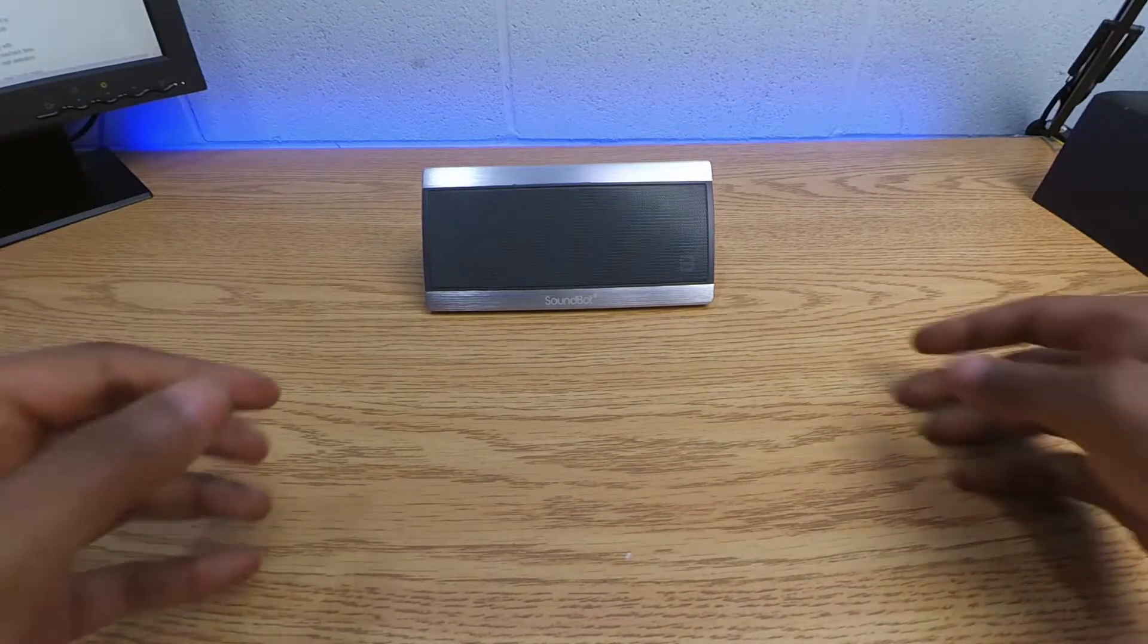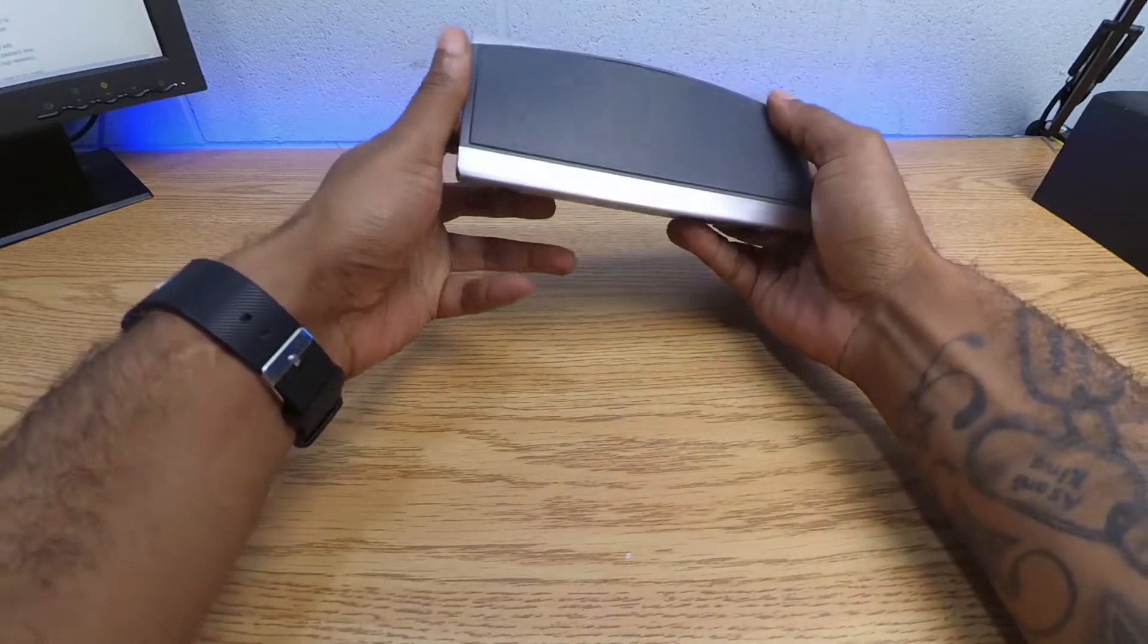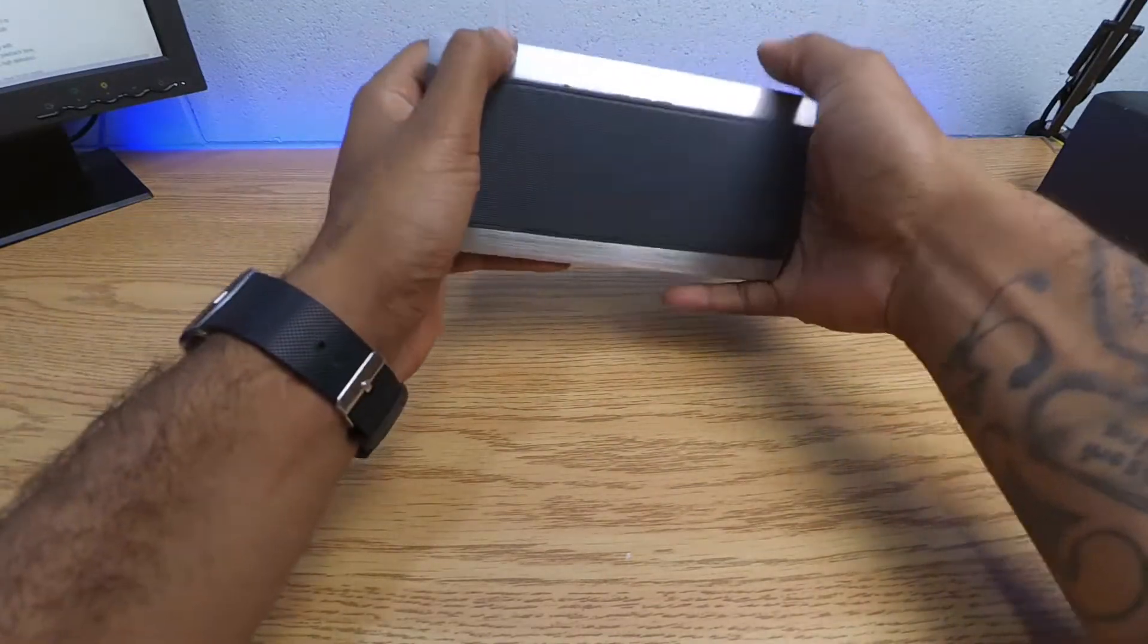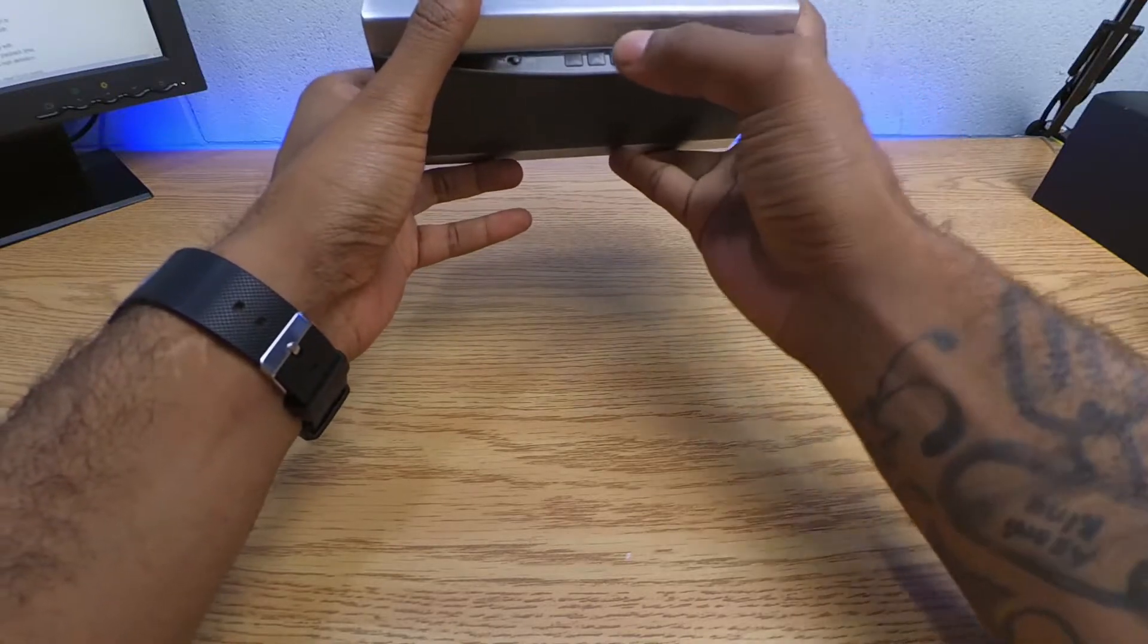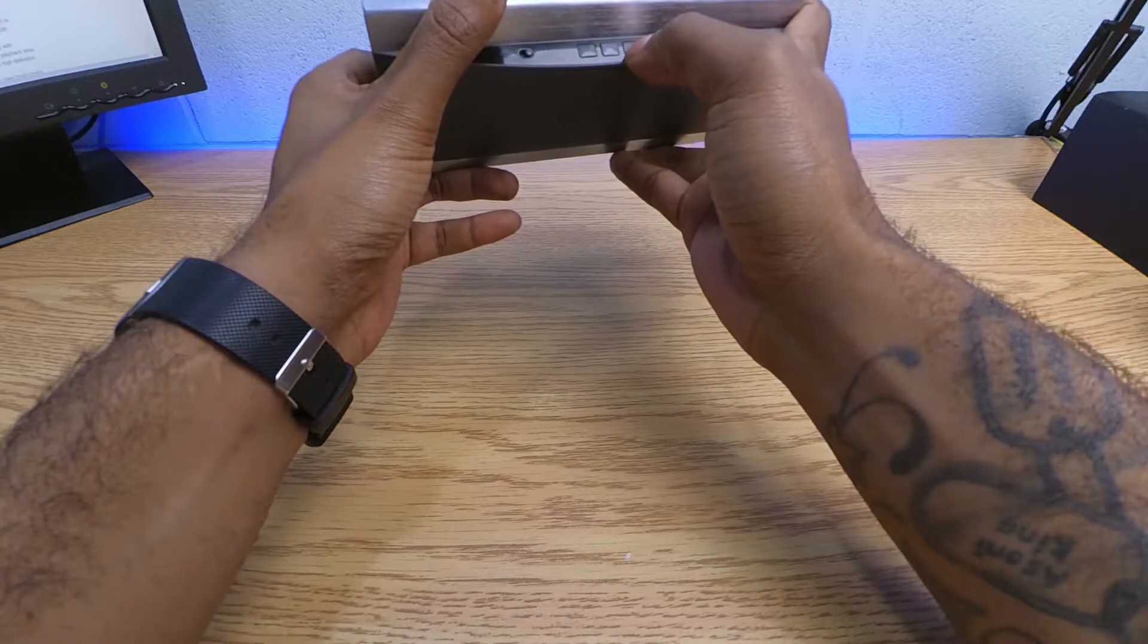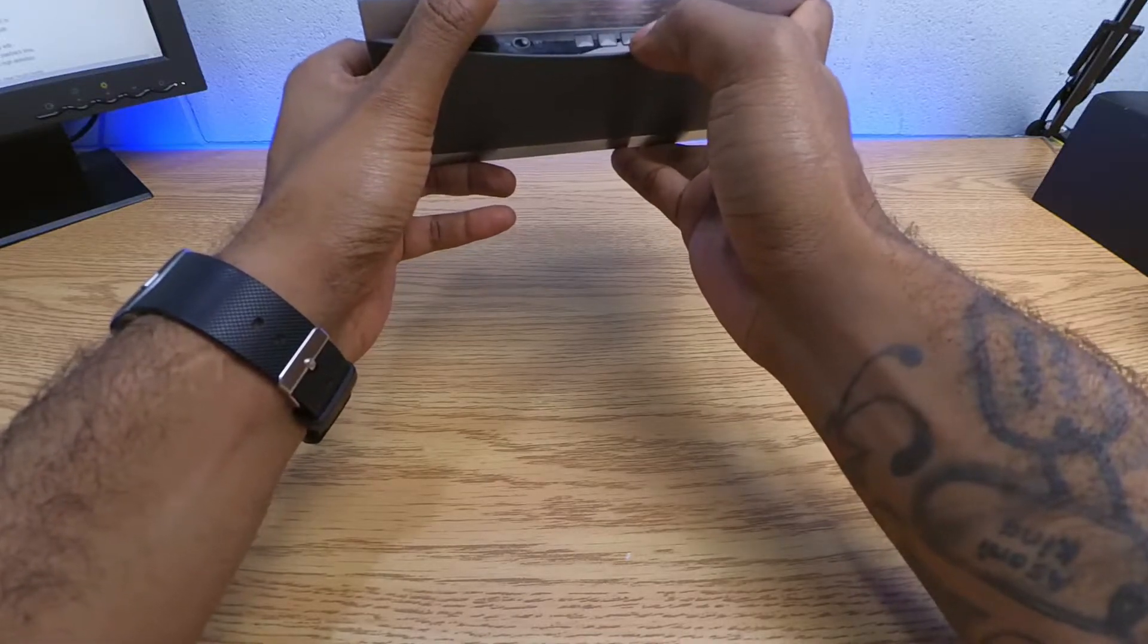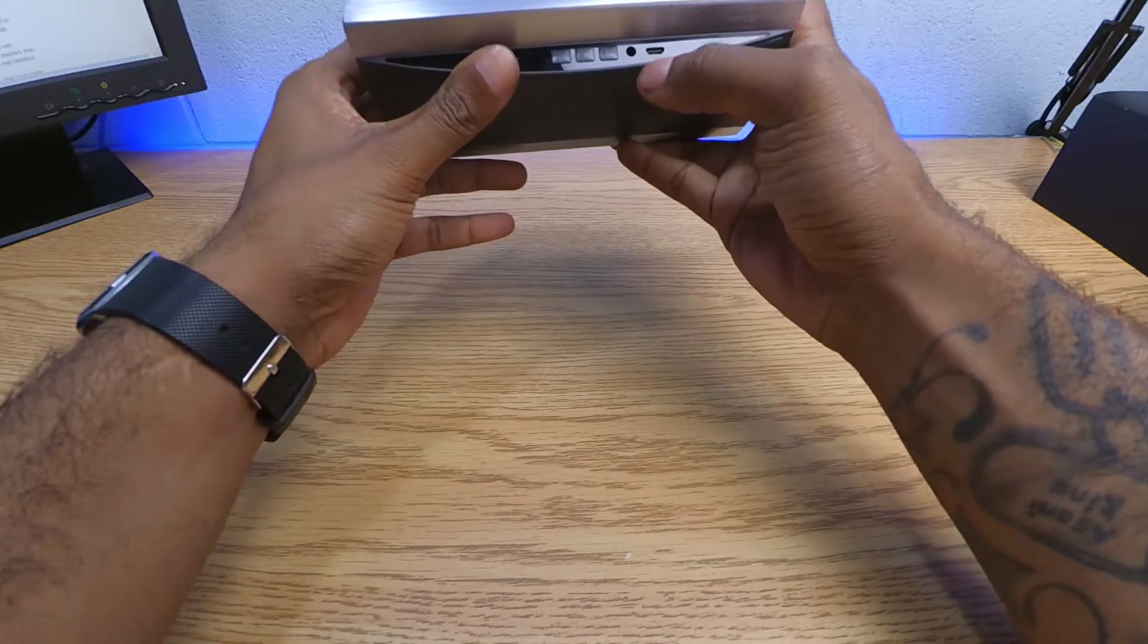At first glance the speaker looks kind of premium. It's all metal. It has your buttons on the top, your call button, your up and down skip and back button, your off and on, your auxiliary input and your micro USB charging slot.